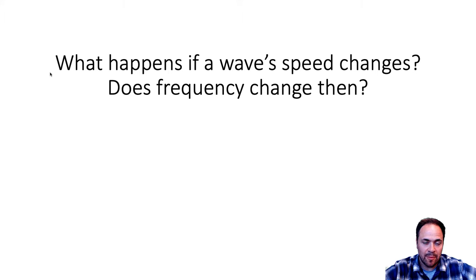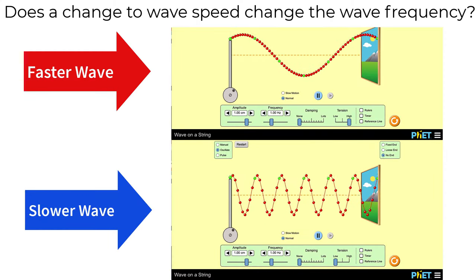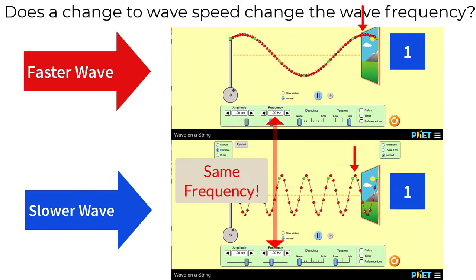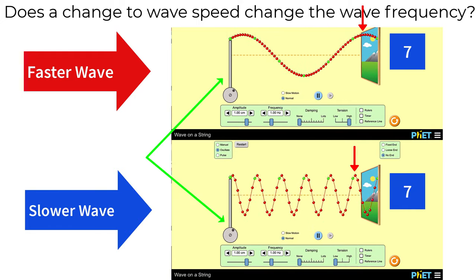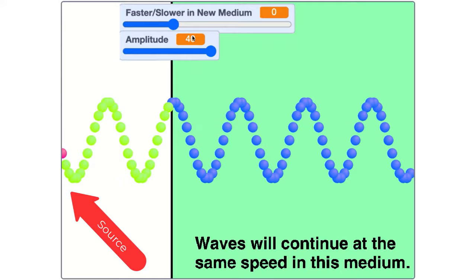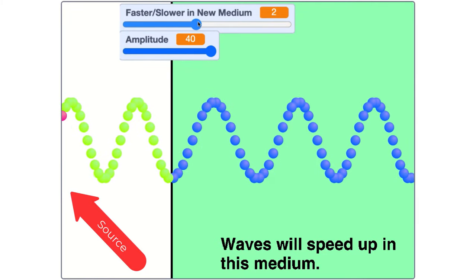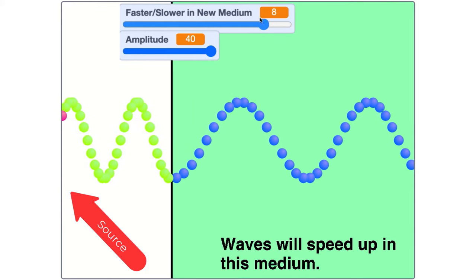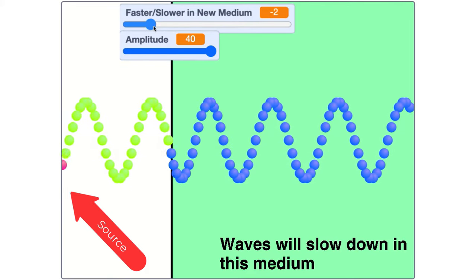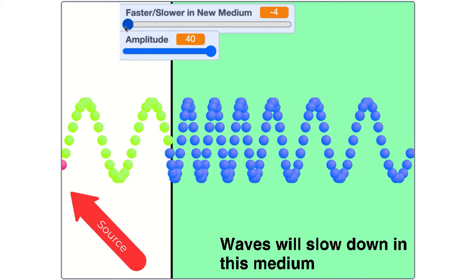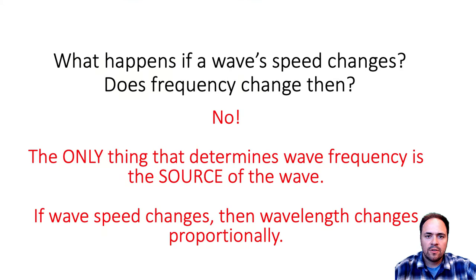What if wave speed does change — does frequency change too? In this simulation, the top wave is faster and the bottom wave is slower, but both have the same frequency because frequency is determined by the source. You can see the piston on both screens oscillating at the same rate. When a wave crosses into a new medium and speeds up, the wavelength gets longer; if it slows down, the wavelength gets shorter. Either way, the same number of waves pass a point each second — frequency stays the same.